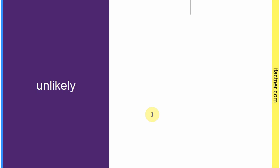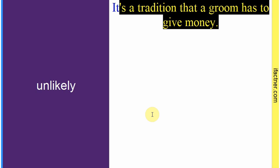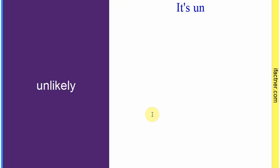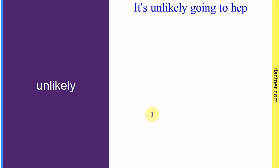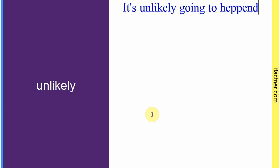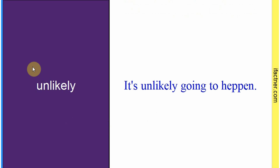Word hai: 'unlikely'. Sentence banaate hain meaning samajhne ke liye: 'It's unlikely going to happen.' Us cheez ka hone ka imkaan kam hai. Toh 'unlikely' hota hai jis cheez ka imkaan kam ho — jo cheez bahot mushkil se ho. Sentence banaaya: 'It's unlikely going to happen.'